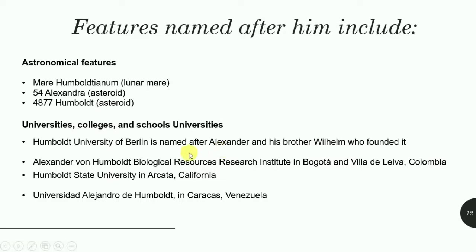Various universities and colleges were named after him, and Humboldt University in Berlin is one of the most prestigious. Karl Ritter was later the head of department of this University of Berlin. If you find this video informative, please like, share, and subscribe.